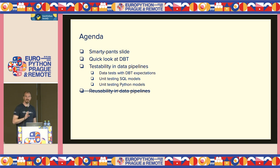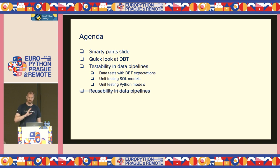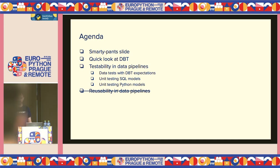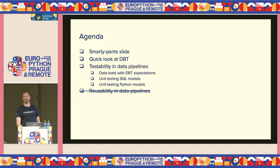With that out of the way, here's the agenda. I have one SmartPen slide — just one. We'll have a quick look at dbt to repeat the concepts important for the talk. Then we talk about testability: first with data tests and dbt expectations, then unit testing for SQL models and Python models. I will skip the part about reusability — I'll mention it a couple of times, and if you're interested you can reach out to me. It turned out that would be a second talk.